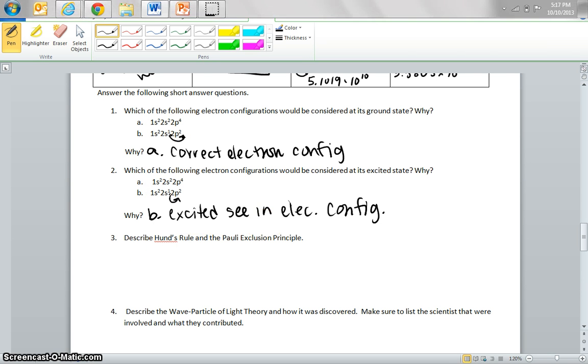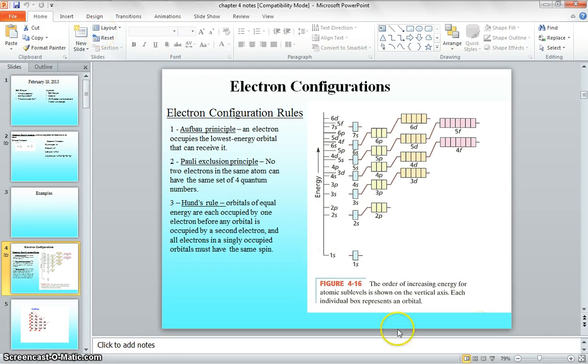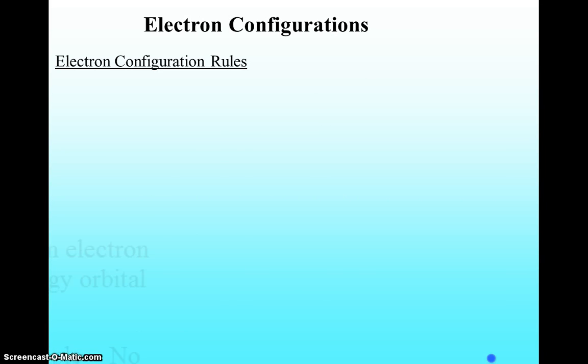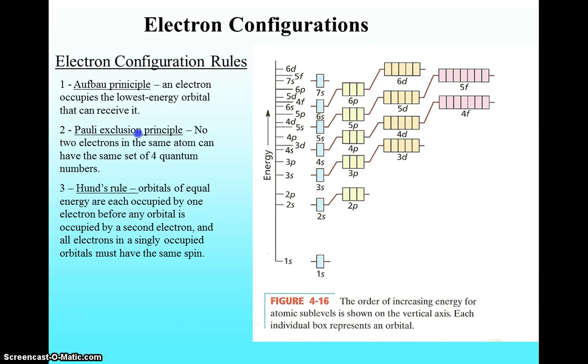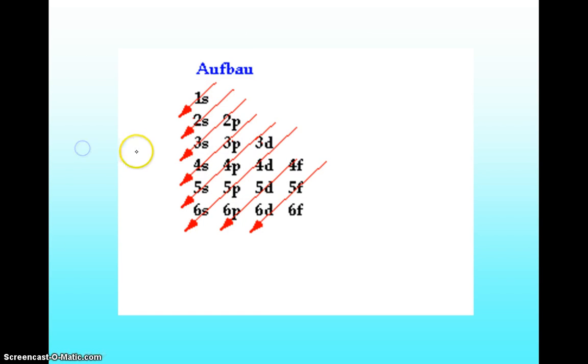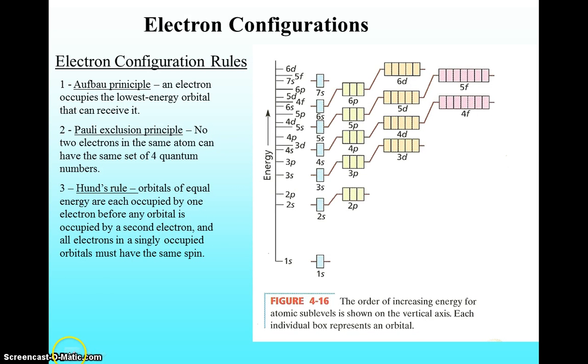Next one is to describe the Hund's rule and the Pauli exclusion principle, and I actually have a great slide for this. So the Pauli exclusion principle states that no two electrons can have the same set of quantum numbers. And the quantum numbers are kind of like a telephone number. The electrons in this orbital right here actually have four quantum numbers, and those four numbers will never be the same for each electron. That's all the Pauli exclusion principle is saying.